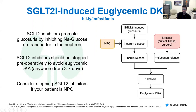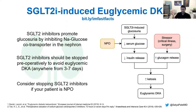Here's a flowchart describing the process. If an SGLT2 inhibitor is given, you get glucosuria, which lowers serum glucose. If the patient is also NPO, that further reduces serum glucose. Together, these decrease insulin release. If a stressor such as critical illness or surgery then increases glucagon, you get a massive glucagon-insulin imbalance. When that happens, you get ketosis and euglycemic DKA.